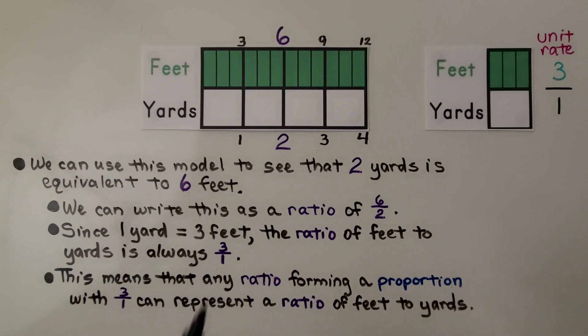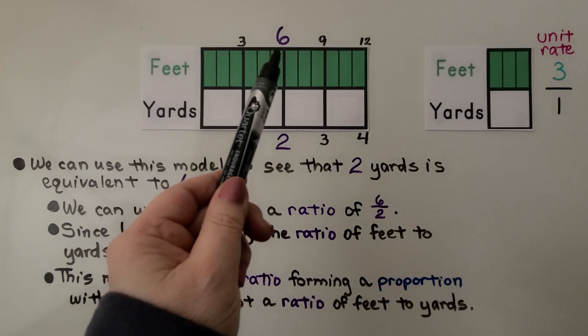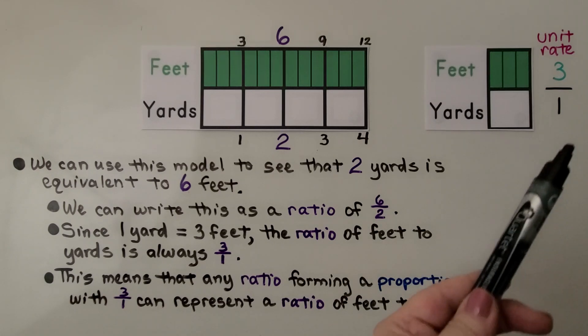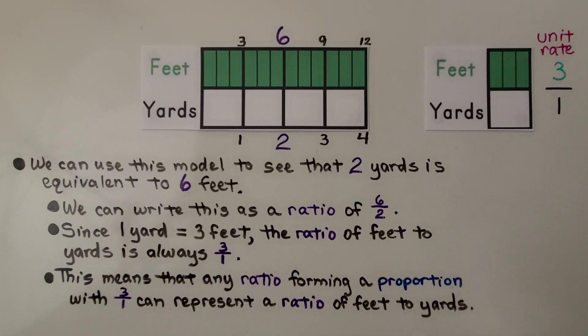We can use this model to see that two yards is equal to six feet. We can write this as a ratio of six to two. Since one yard is equal to three feet, the ratio of feet to yards is always three to one. This means that any ratio forming a proportion with three to one can represent a ratio of feet to yards.